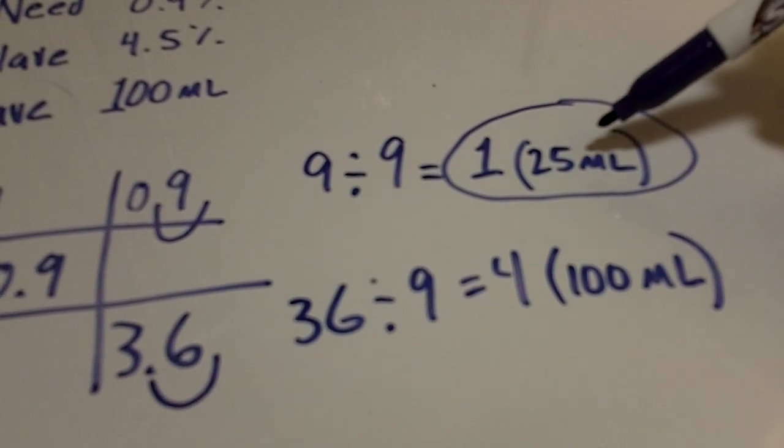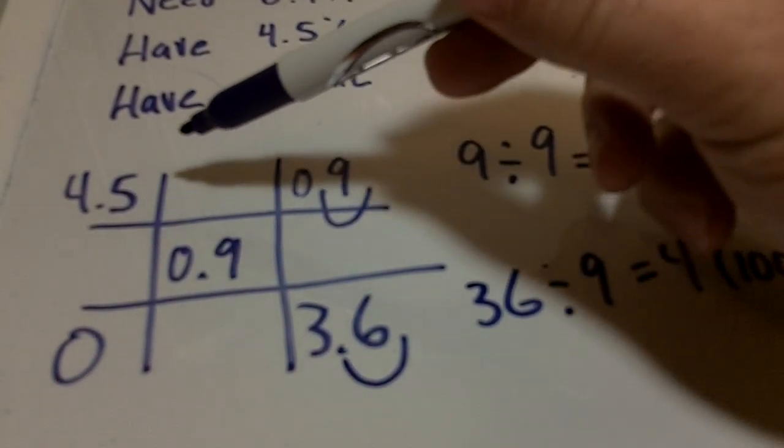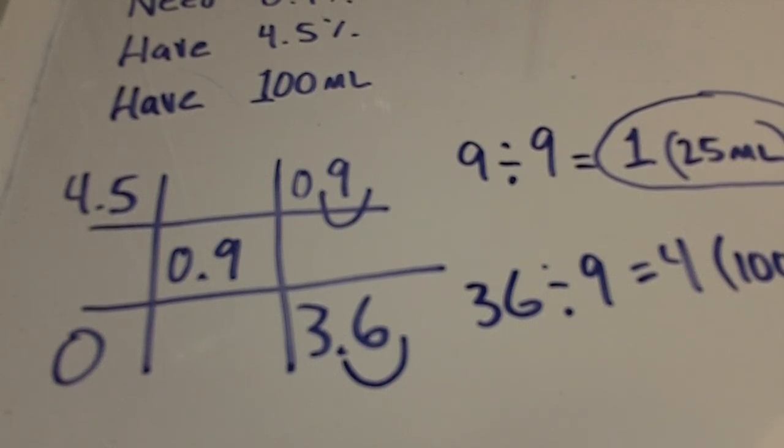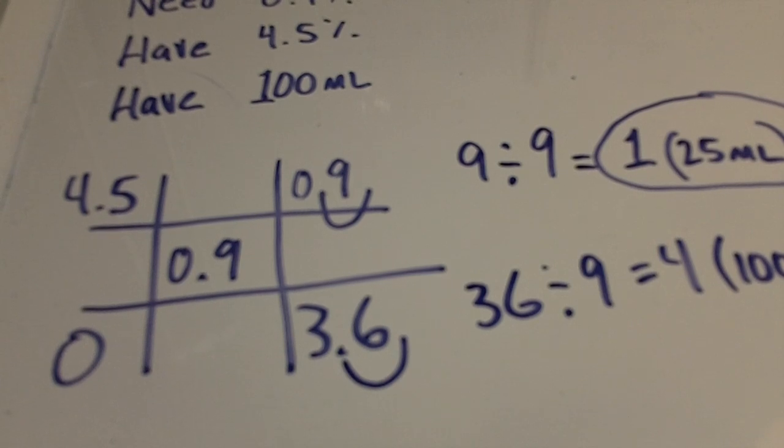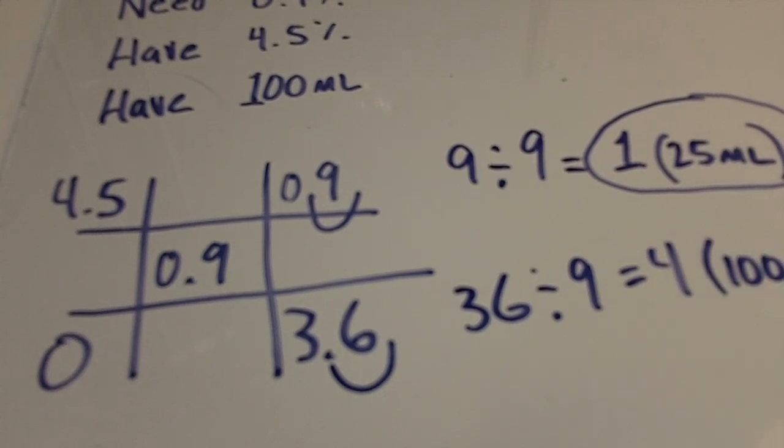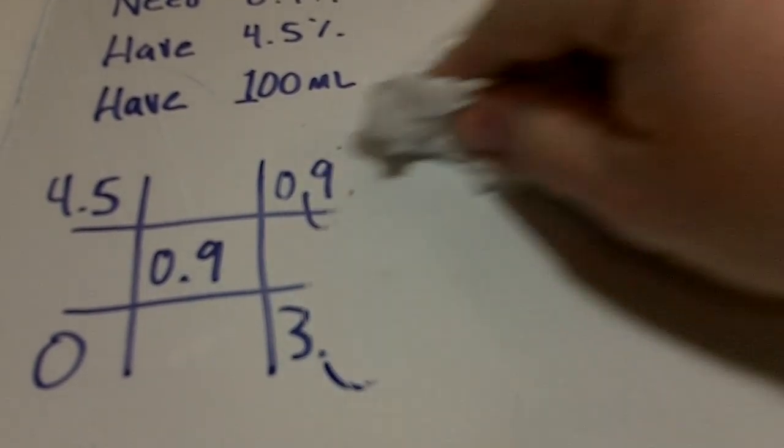Now the only reason that this allegation worked out so nicely is because these numbers, these decimals, could be moved around very conveniently and then convert to such an easy ratio. It's not always like that—in fact, it's rarely like that. And so usually I would jump into C1V1 equals C2V2.